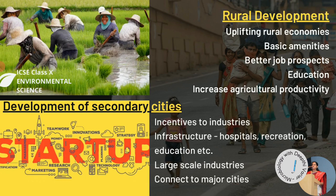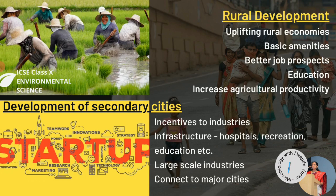The government must provide better job prospects in rural areas, better education, increased agricultural productivity, and assistance for those below the poverty line through job training. Skilled laborers and artisans should have their products marketed by the government. Schemes like the National Rural Employment Program or Jawahar Rozgar Yojana are in place but need to be improved and expanded so that every rural setup can be developed and people need not travel to the city.